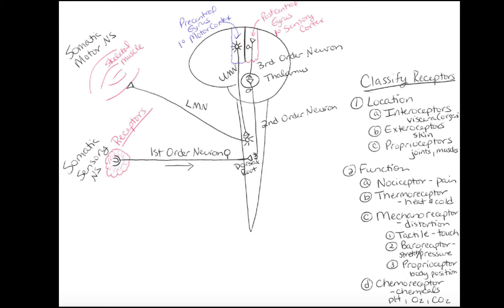Now we classify receptors by function — what are they detecting? The first type is the nociceptor, which detects pain. When you cut or bruise a tissue, pain receptors pick that up. Nociceptors are also activated by extreme temperatures — extreme cold is painful, and putting a hand over a flame gets too hot and is painful.